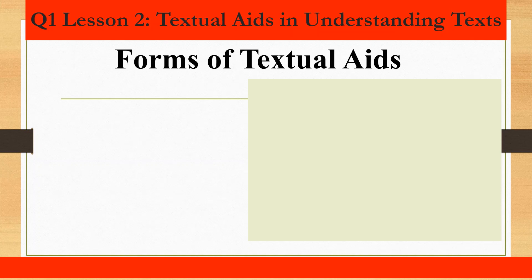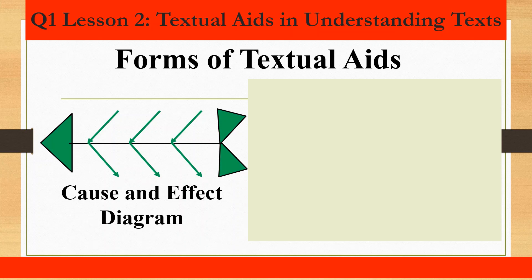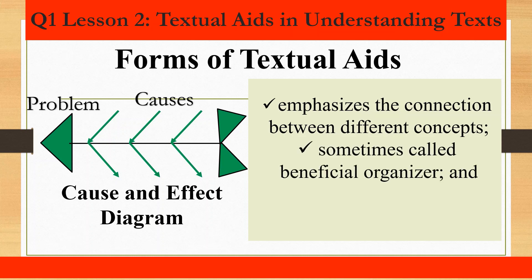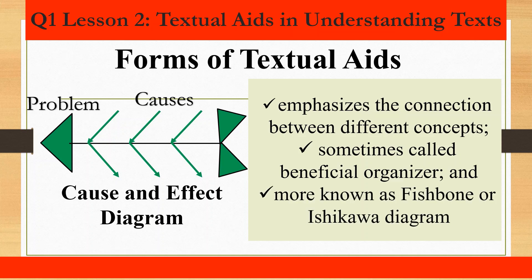Now let us look at the different forms or types of textual aids. First, the cause and effect diagram. This diagram emphasizes the connection between different concepts. It is sometimes called the beneficial organizer since it can be applied to all subject areas. This is more known as the fishbone or Ishikawa diagram, named after Kaoru Ishikawa, a Japanese professor who created the said diagram.